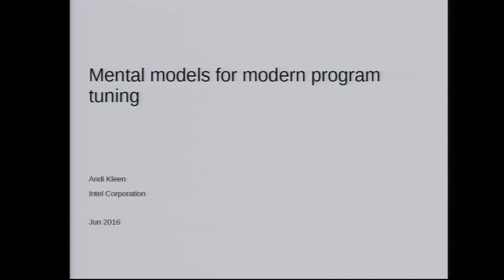I want to talk about mental models for modern program tuning. I'm mostly talking about cache performance. Some of the things I'm talking about, you might already know if you have experience tuning with caches, but there might be some new things in there too. It's also about how to calibrate your mental model to reality. I'm presenting a few new techniques — they're somewhat Intel-specific, mostly because that's what I work on.